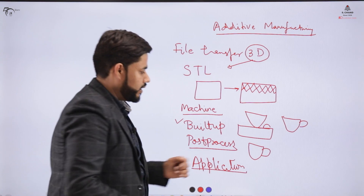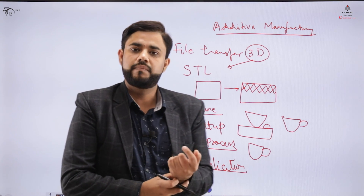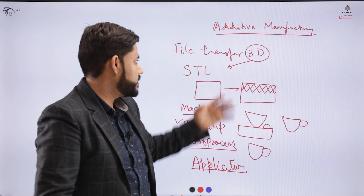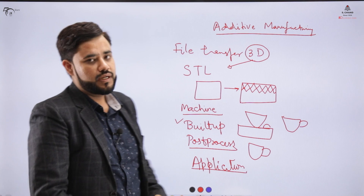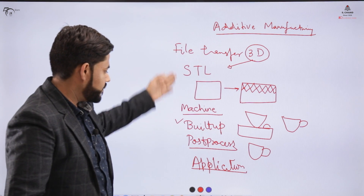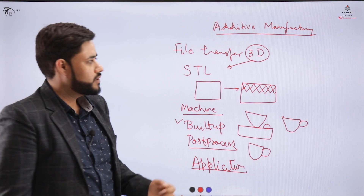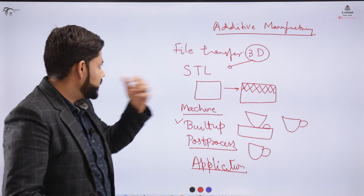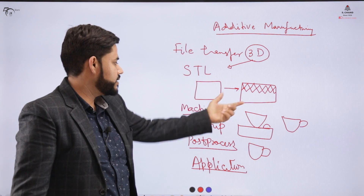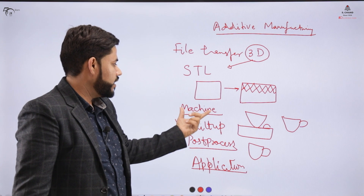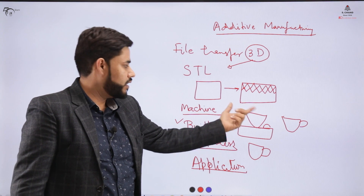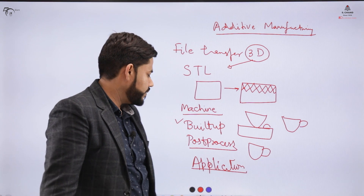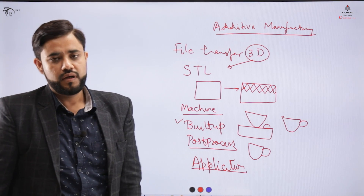You can drink your tea in a cup directly which has been 3D printed. Compared to CNC machining, additive manufacturing has certain advantages. The basic process involves file transfer and conversion into an STL file, then machine build-up where the 3D printed components appear, followed by certain post-processes, and finally the item is ready for use.